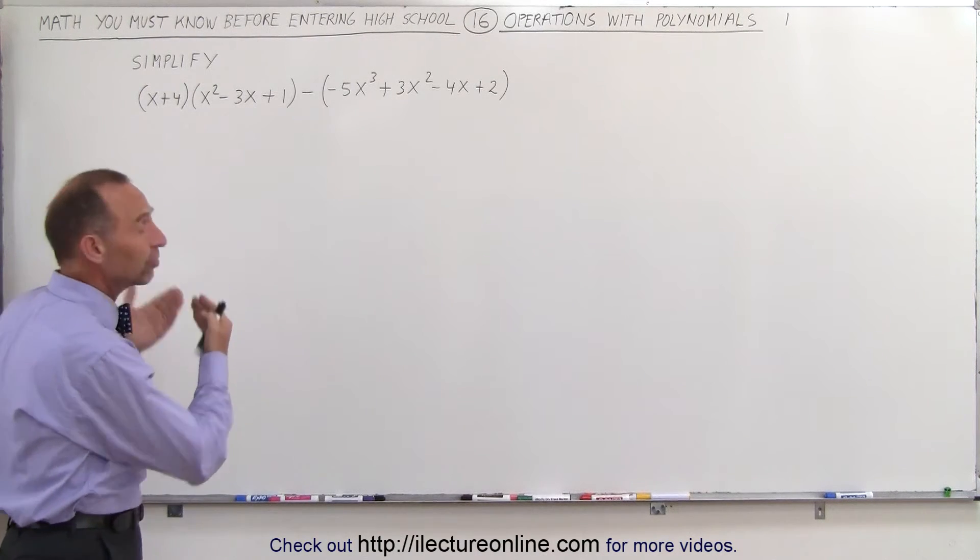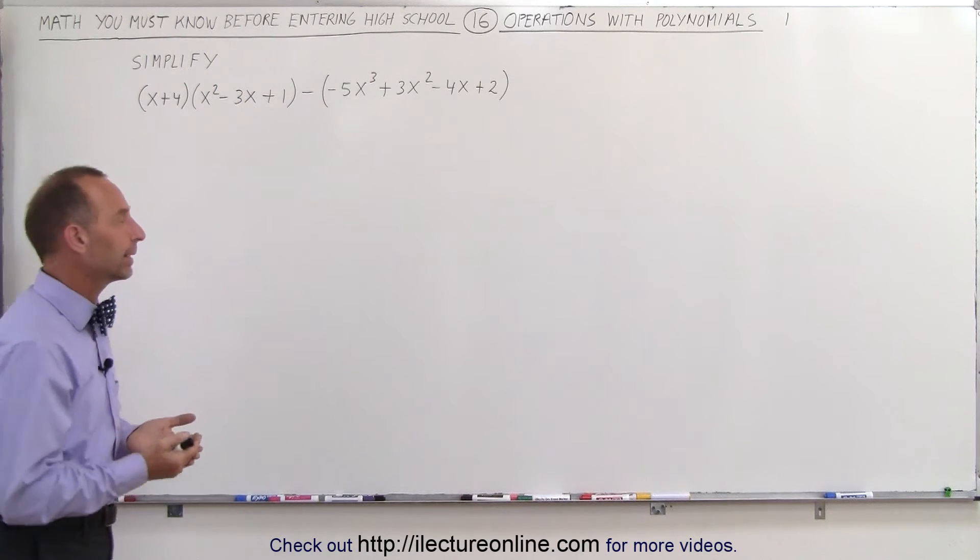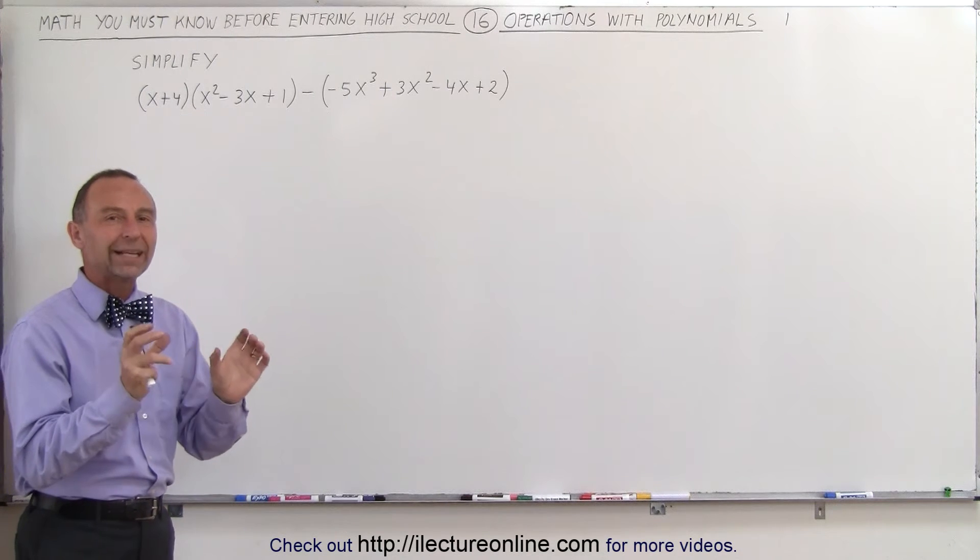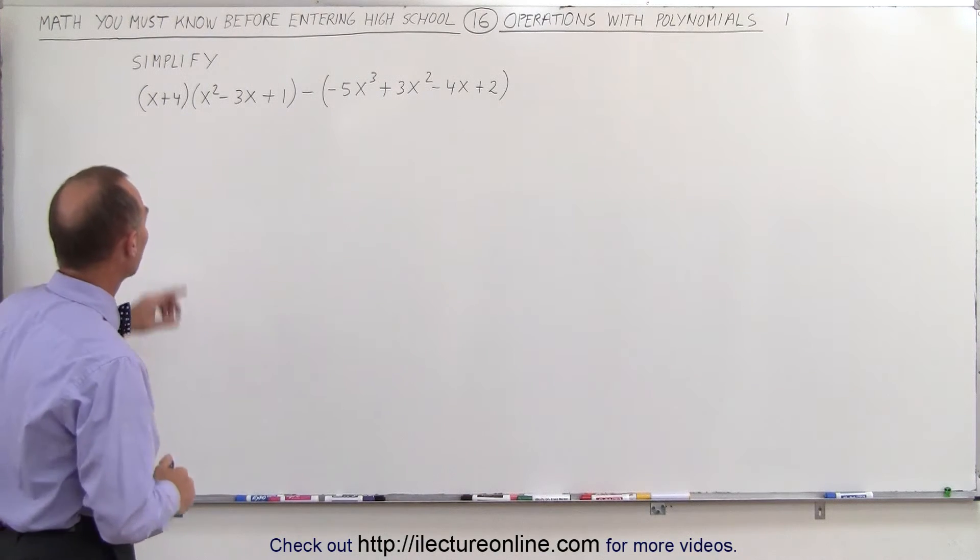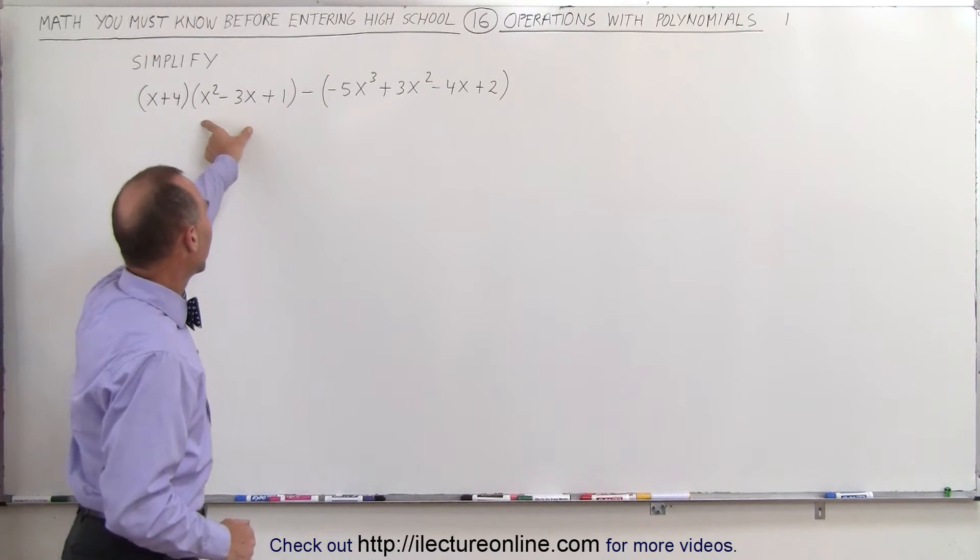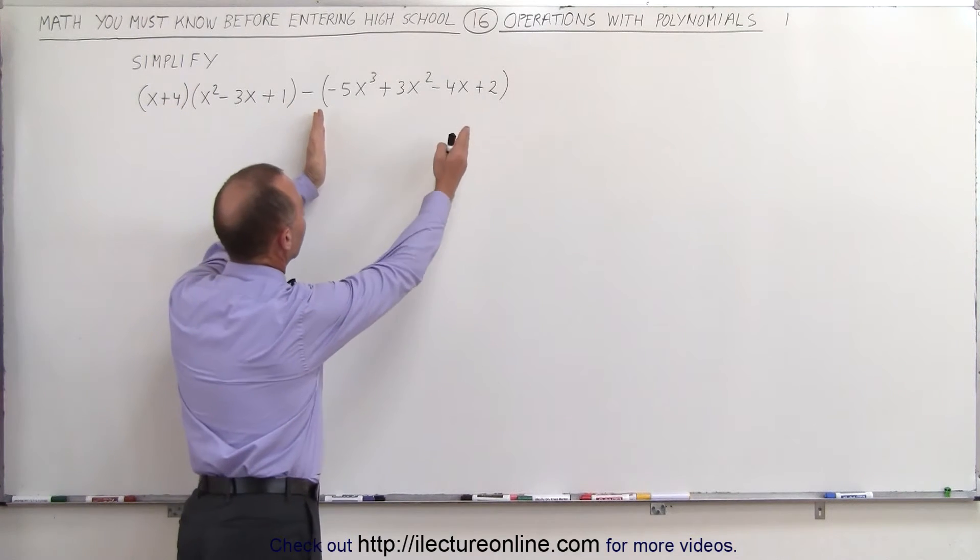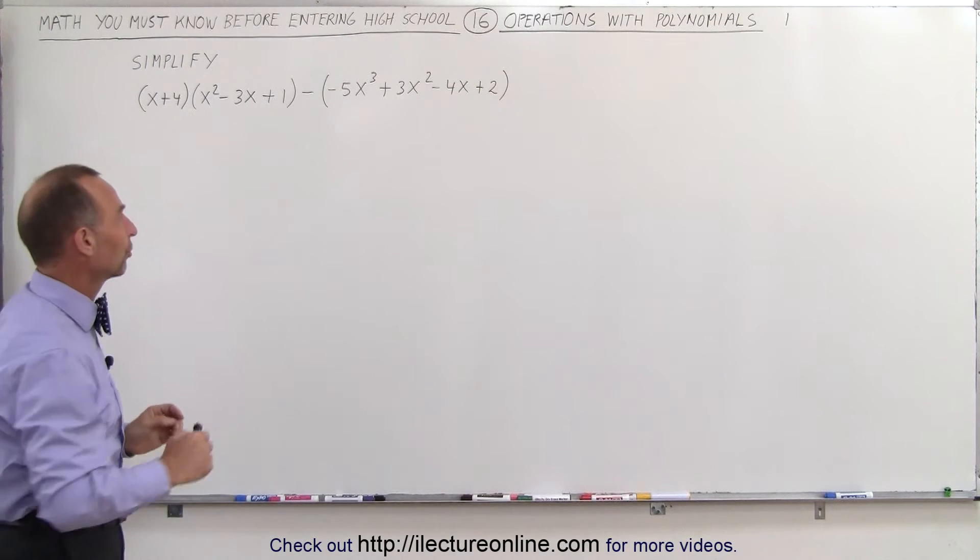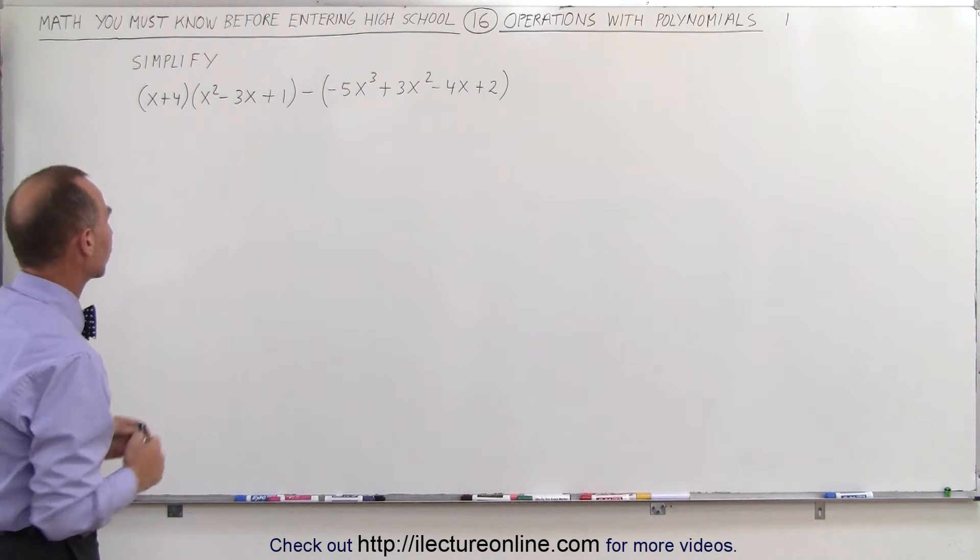Also, sometimes they tell us to simplify an expression like this, which means multiply everything out, collect common terms, and write it in its simplest form. So what we need to do here is multiply this binomial times this trinomial, and then subtract from that this polynomial over there. When they say that, they simply mean collect the terms that are like, or collect like terms.